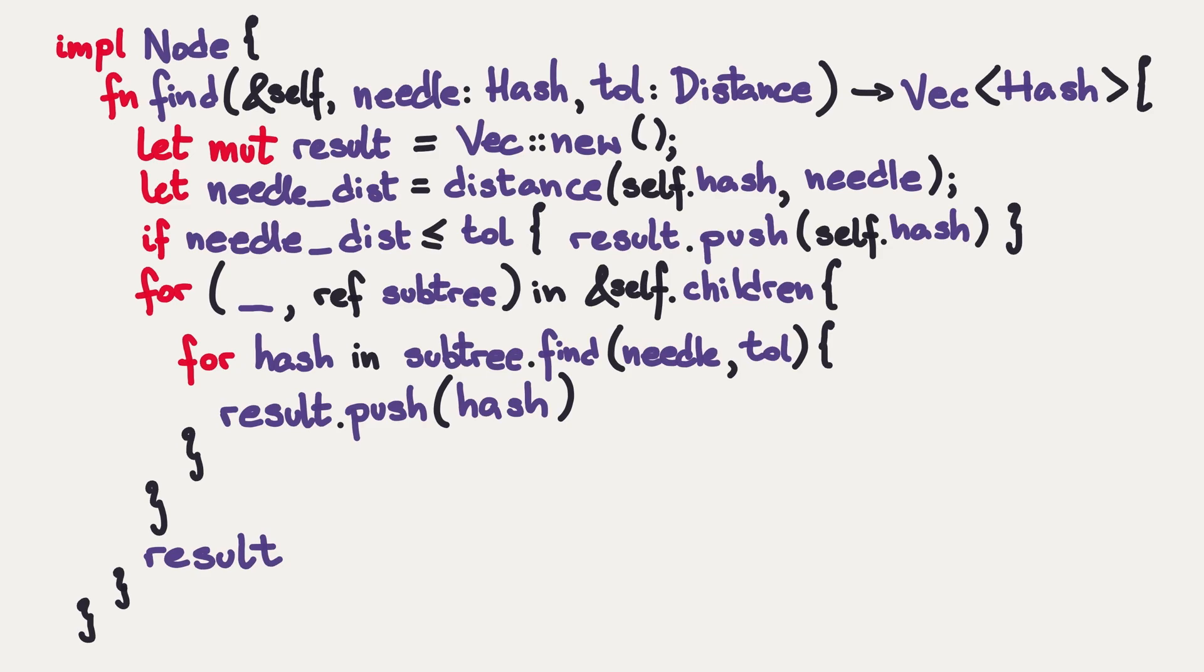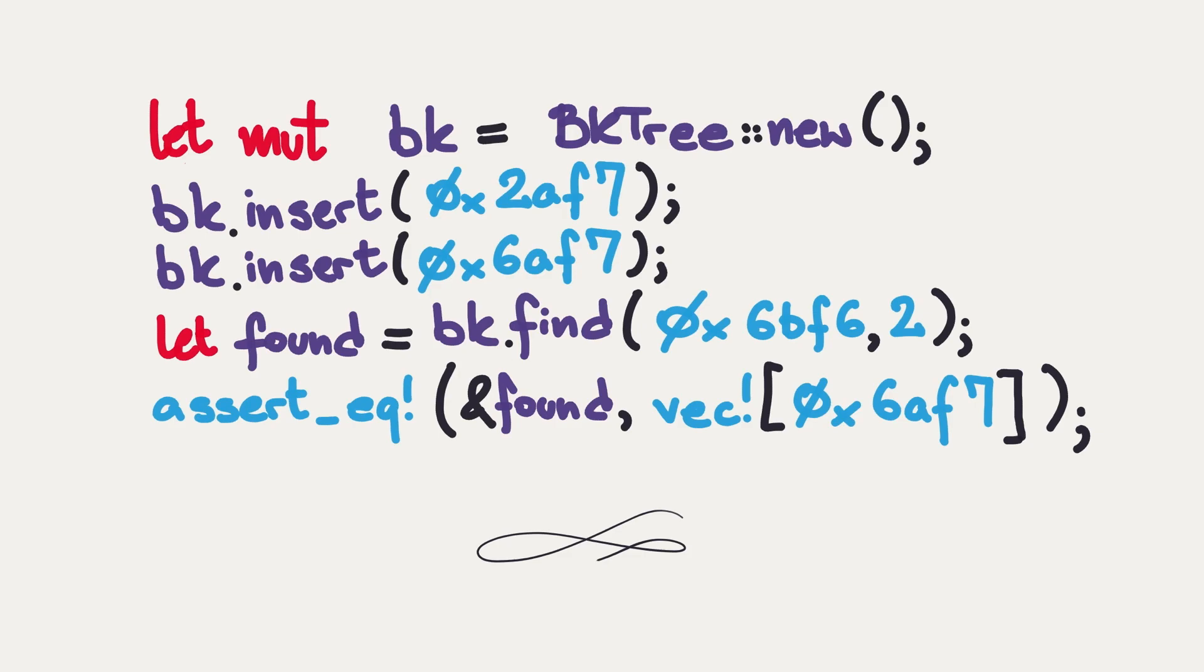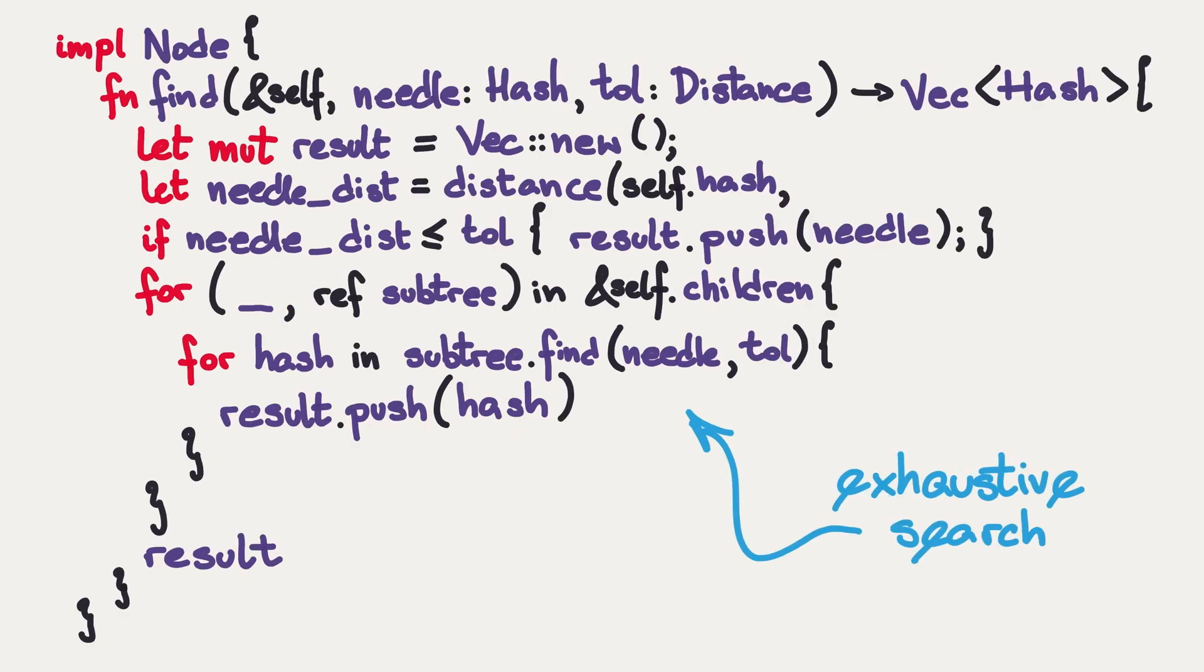And we can then test this implementation by starting with a mutable BK tree, inserting two hashes into it, and then making sure that only one of those hashes is too distant from the test hash. Well, there is a problem. There is a problem because this for loop is an exhaustive search. It brings me nothing, right? I'm still looking at every single node I have in my tree.